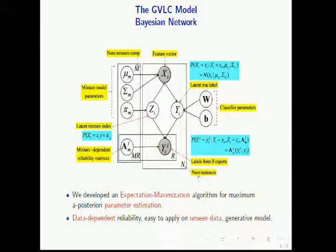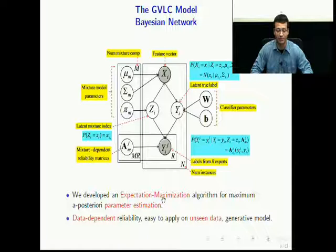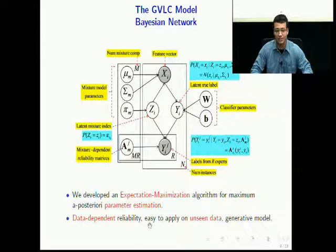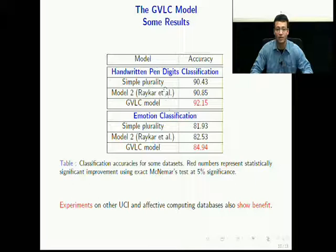We then develop this model and construct the Bayesian network for learning various parameters. We developed an expectation-maximization algorithm for parameter estimation in the Bayesian network, and this model enables data-dependent reliability. It is easy to apply on unseen data, and it is a totally generative model. We tested this model on a wide variety of datasets involving multiple human and machine experts, and we observed a benefit on all cases compared to several baseline models. This slide shows results from two common examples of handwritten digits classification and emotion classification, and in both cases we observed a benefit.